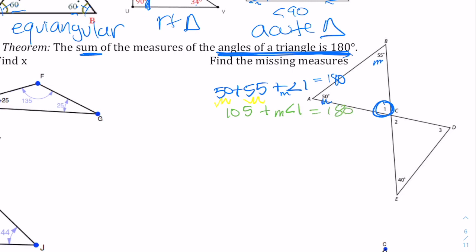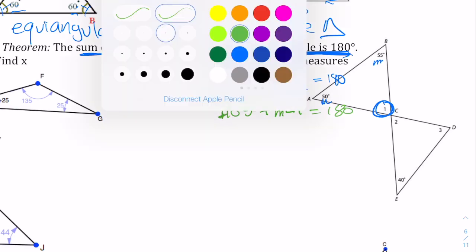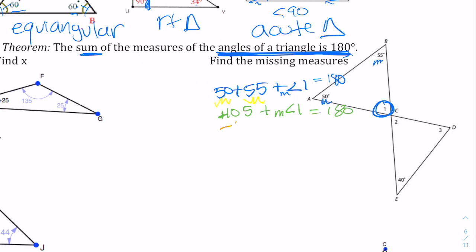We want the measurement of angle one by itself, so we undo the adding of 105. There's an implied positive sign here, so to undo the adding, we subtract 105. Taking 105 from 180 leaves us with 75. So the measurement of angle one is 75 degrees.